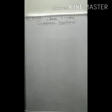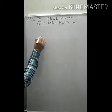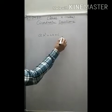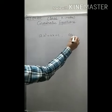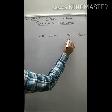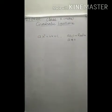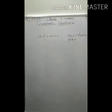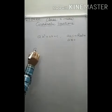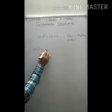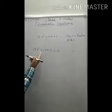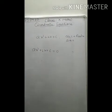We have studied that a polynomial of the form AX² + BX + C, where A, B, C are real numbers and A should not be equal to 0. Any polynomial of this type is known as a quadratic polynomial. And when we equate this quadratic polynomial equal to 0 with the same conditions, then this quadratic polynomial will become a quadratic equation.